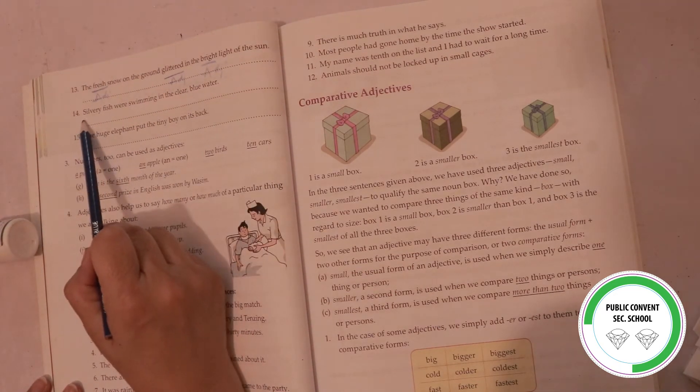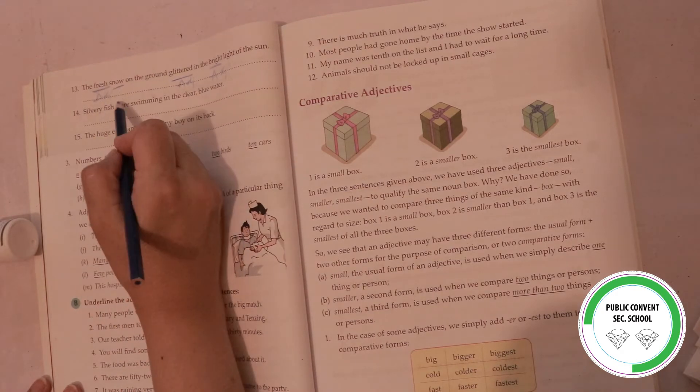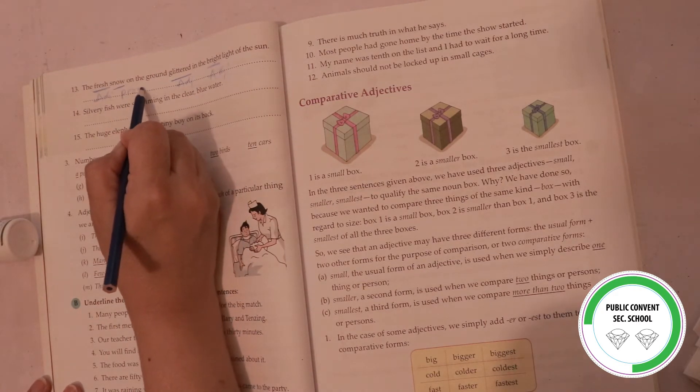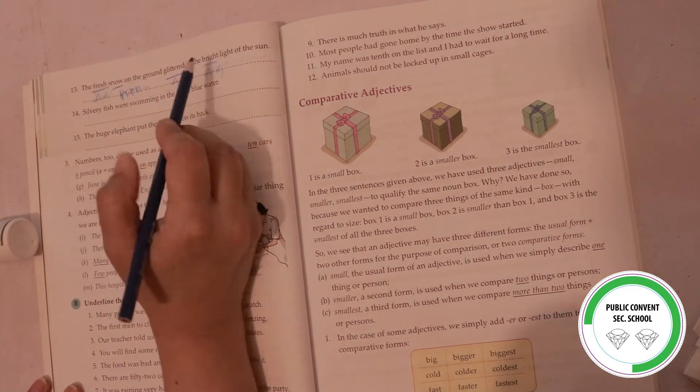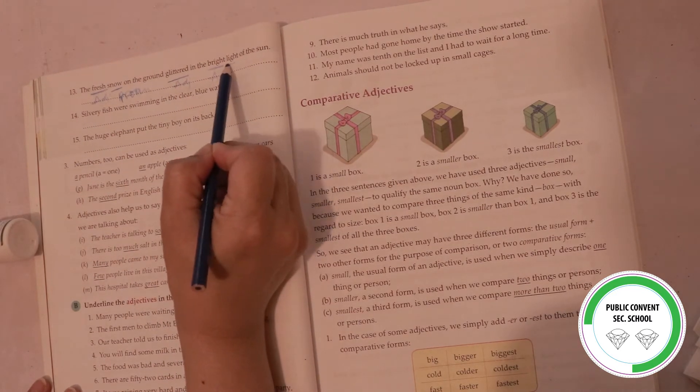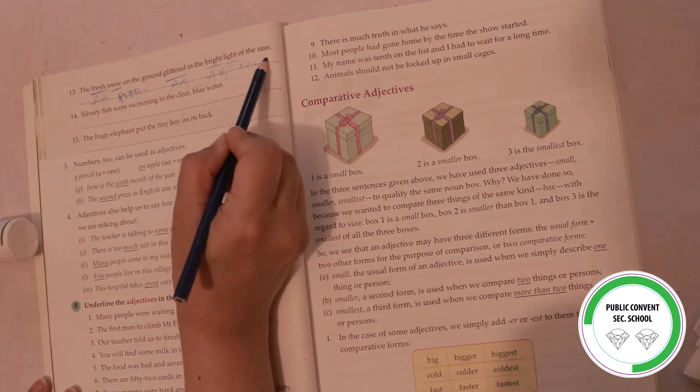Now, snow is the noun, snow is the noun, and light is the noun. Sun is the noun.